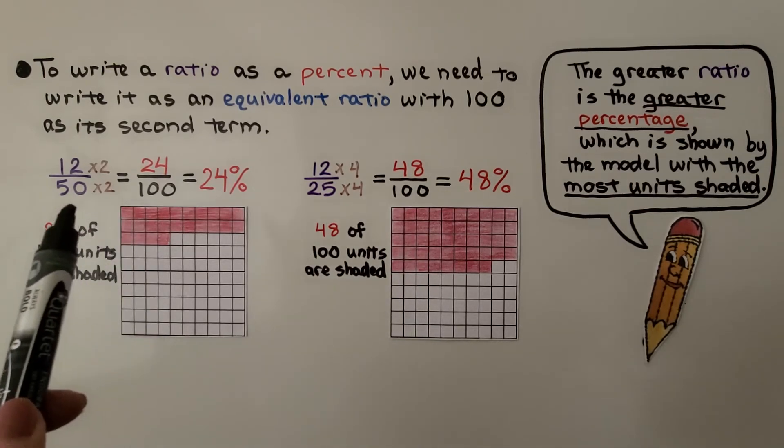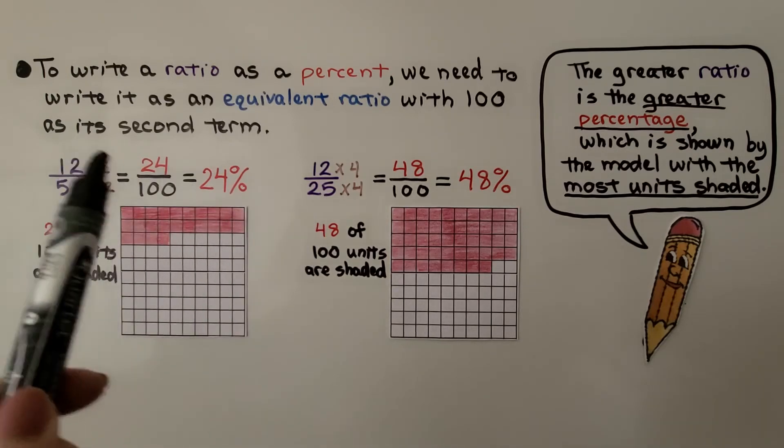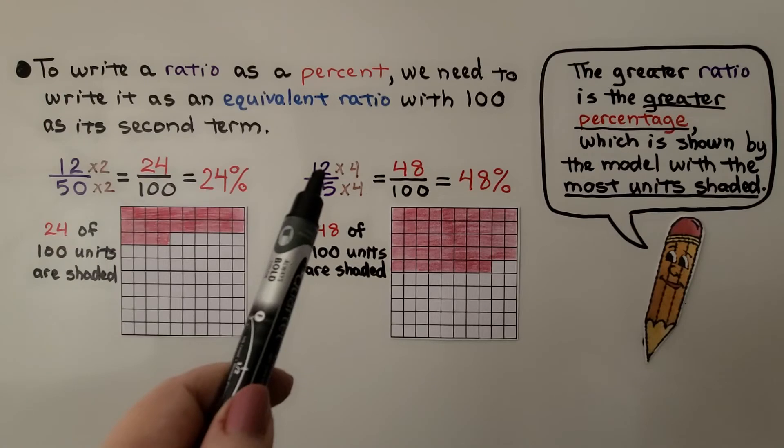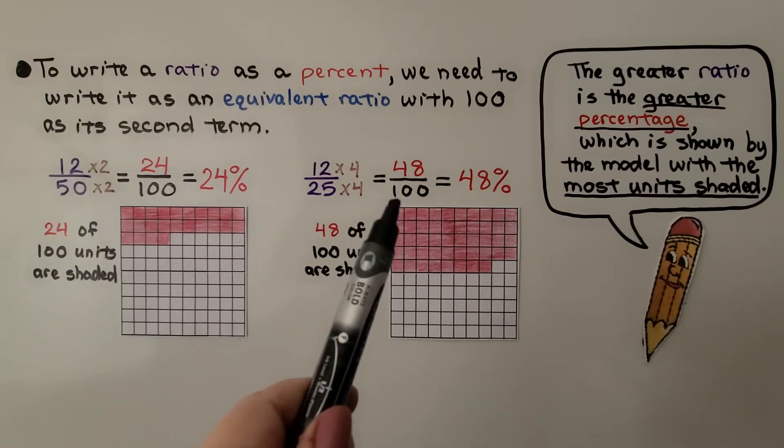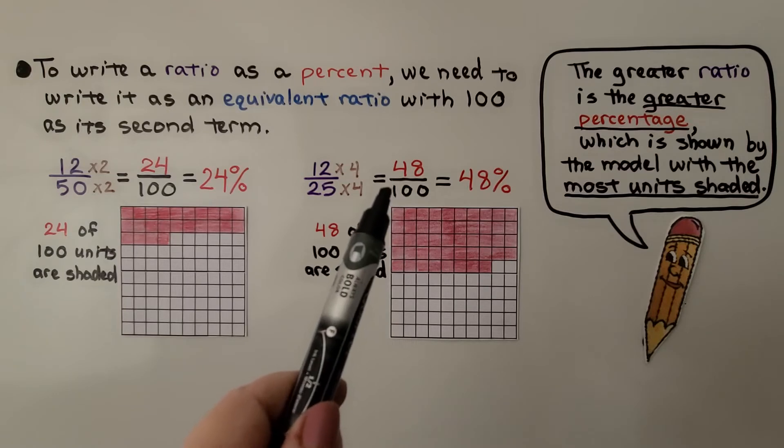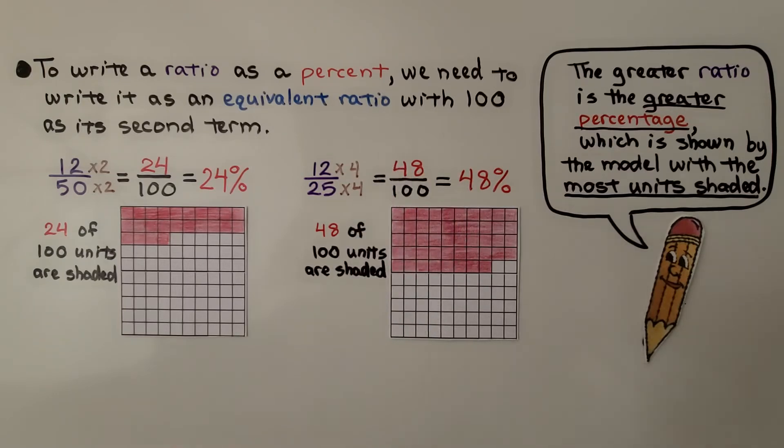And notice this second term is a 50 and this second term is a 25. They both have 12 for the first term for the numerator, but this is the greater ratio because when we give it 100 as the second term, the denominator, we end up with a greater numerator, a greater first term.